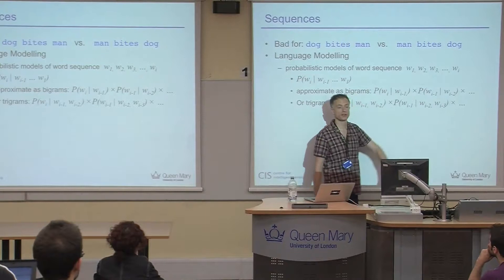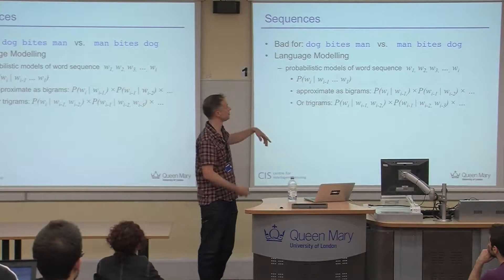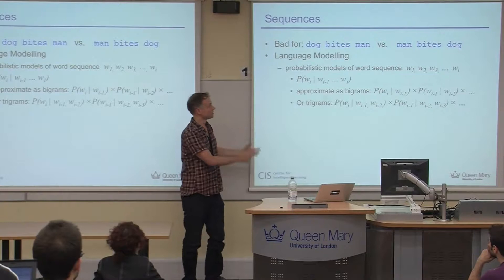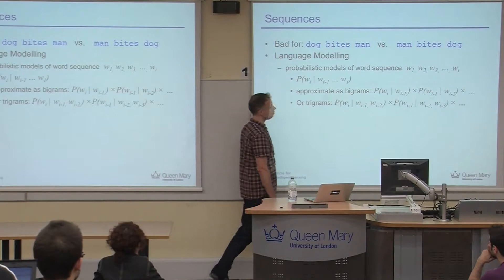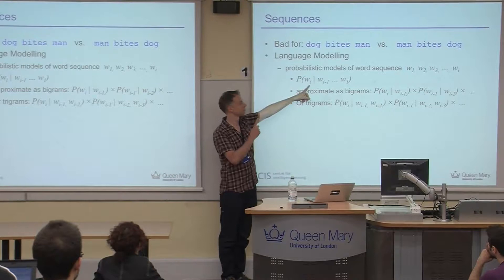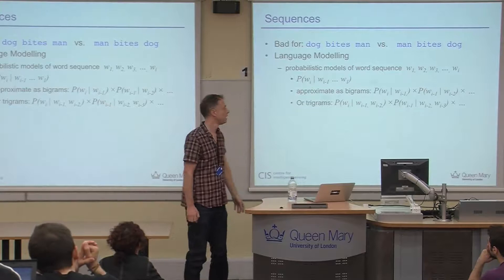The obvious computational response is: we need to take word sequence into account. There's a whole family of techniques broadly called language modeling, where the insight is that we're trying to estimate — given some data you've seen — the probability of some sequence of words. For any word in a text, a language model gives you the probability of seeing that word given the words you've seen before it. It's used a lot in speech recognition to disambiguate sounds, and also in document classification.